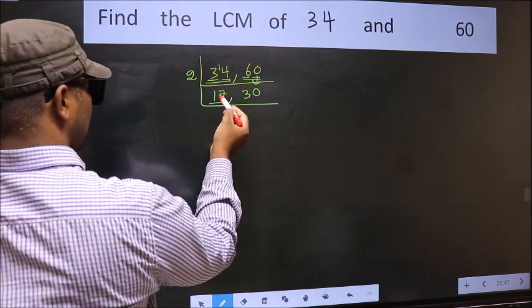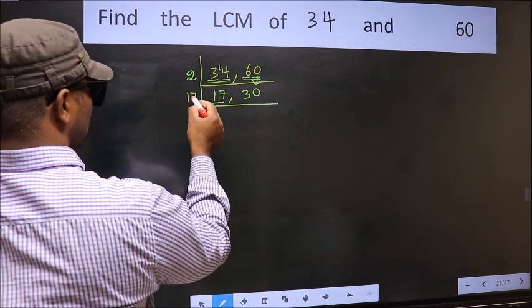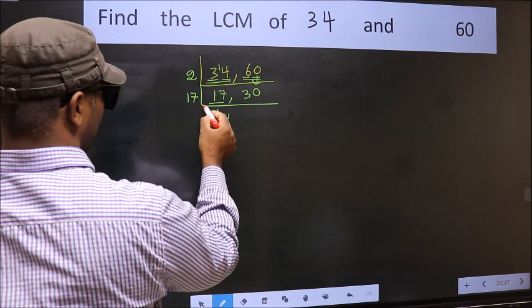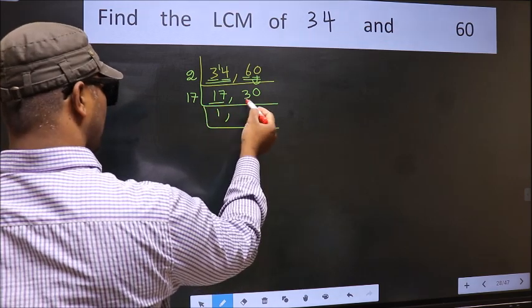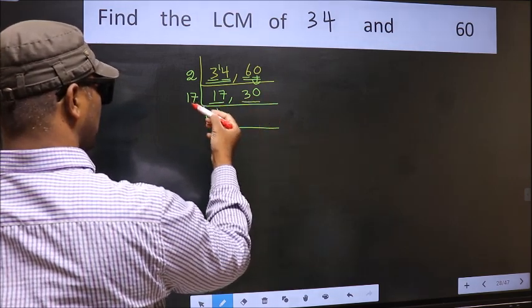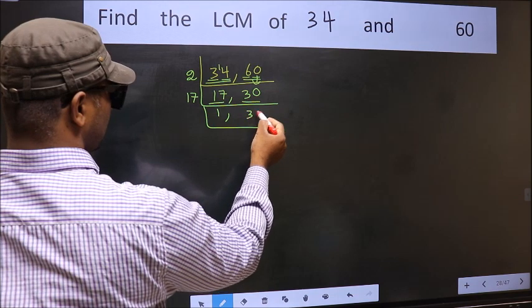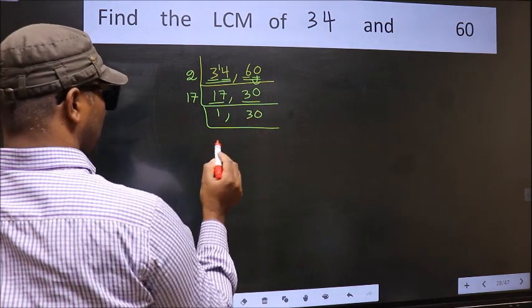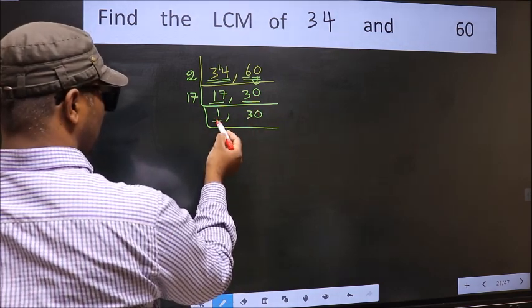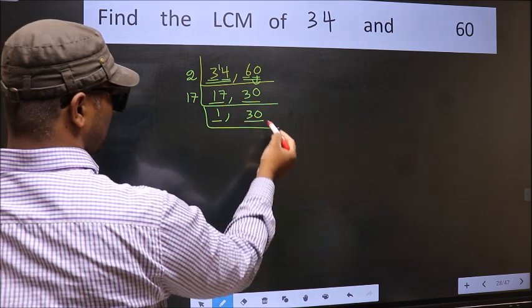Now here we have 17. 17 is a prime number, so 17 once is 17. The other number 30, not divisible by 17, so we write it down as it is. Now we got 1 here, so focus on the other number 30.